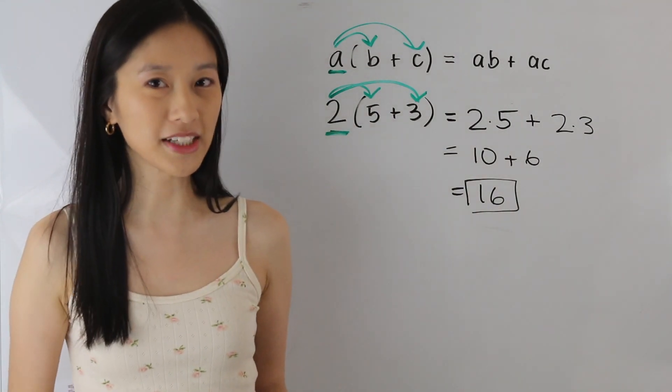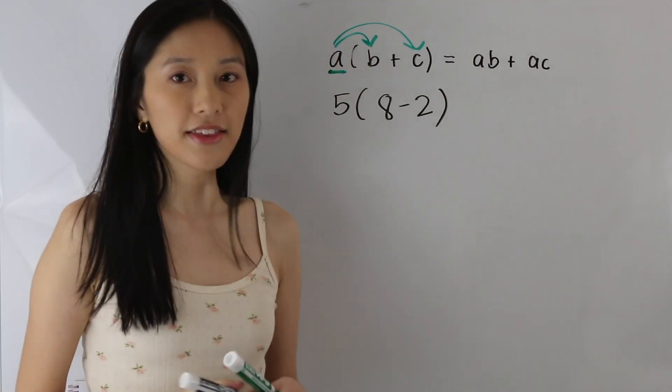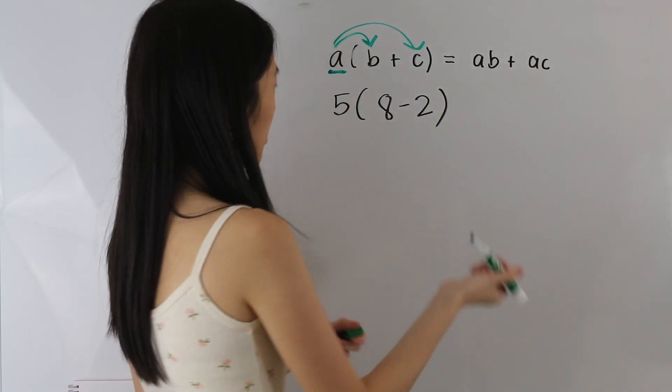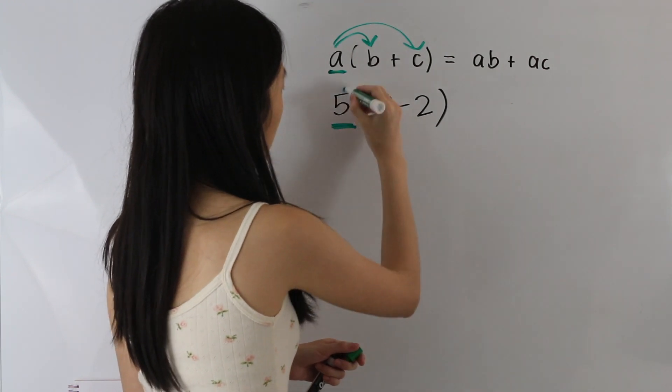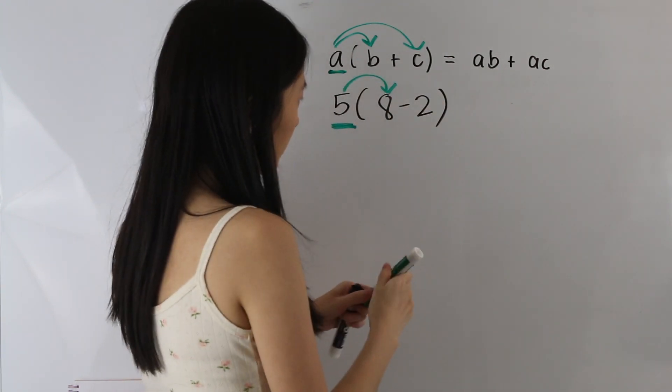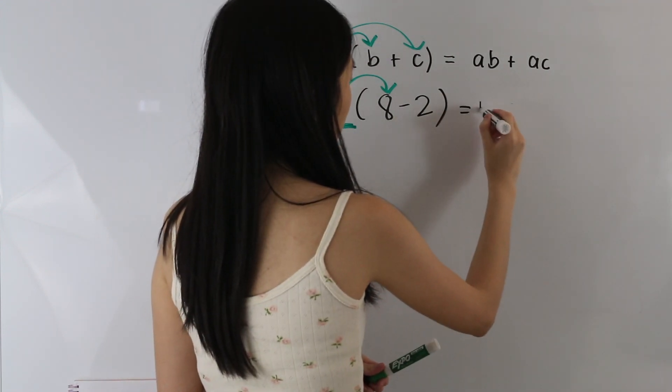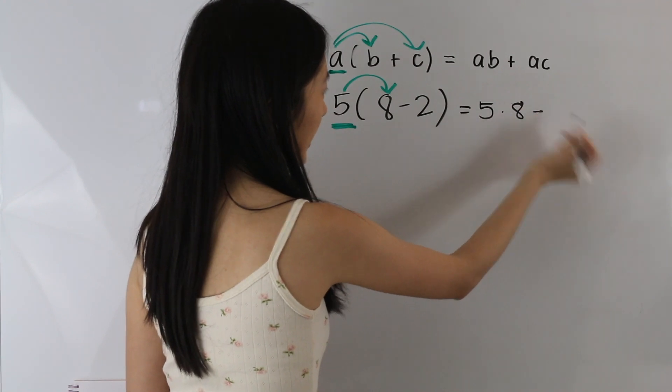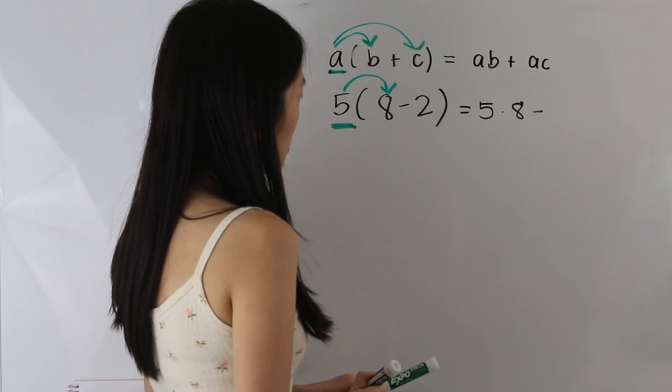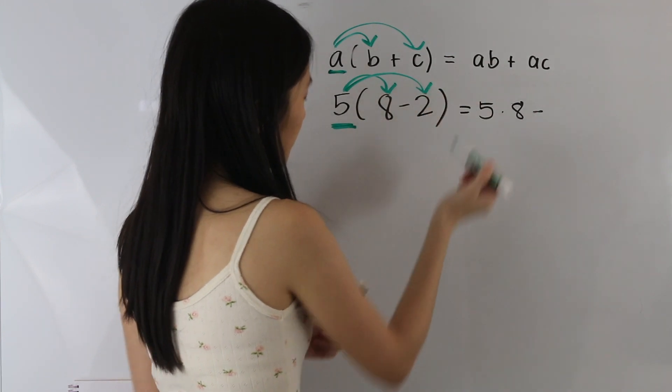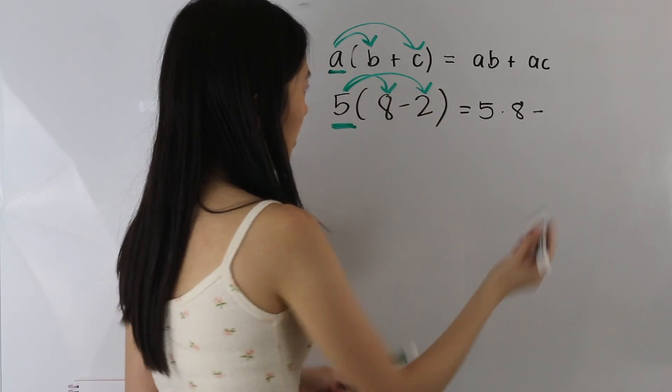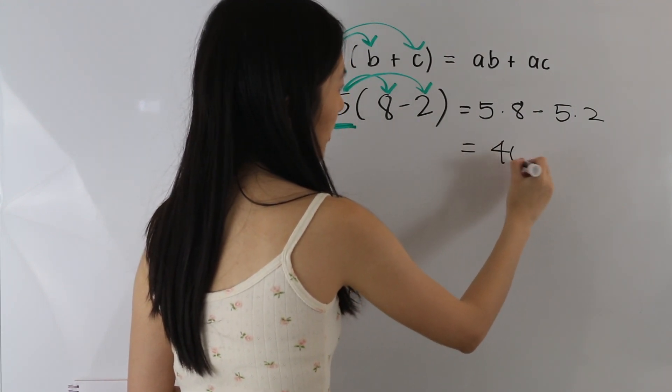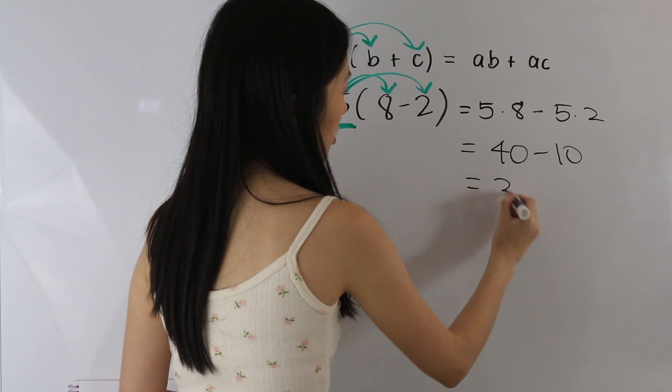So let's go ahead and take a look at one more example. So in this example here, we have 5 times 8 minus 2. So the first thing that we want to do is multiply this term outside by the number 8. And so we have 5 times 8. And then we have a minus sign here, so we put a minus sign here. And then next, we want to multiply this 5 by the 2. And we get 5 times 2. And then simplifying this, we get 40 minus 10, which is equal to 30.